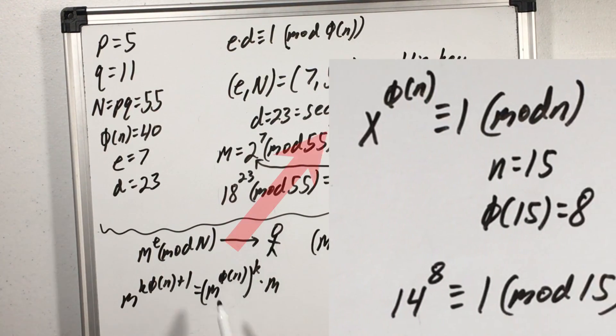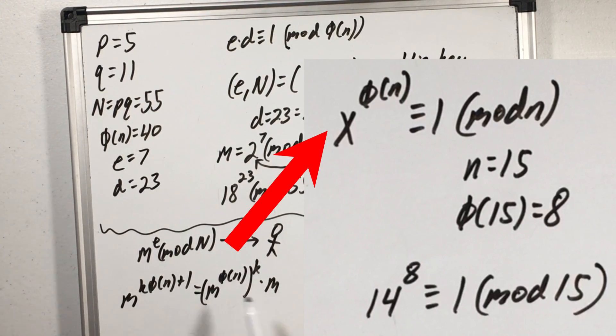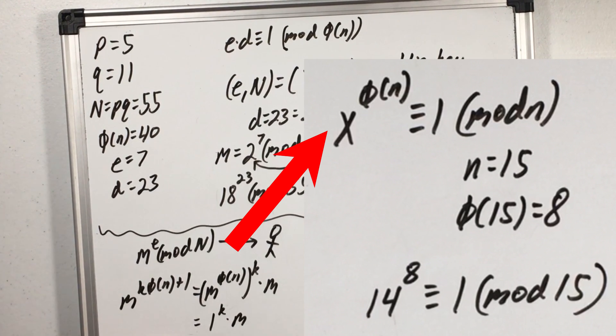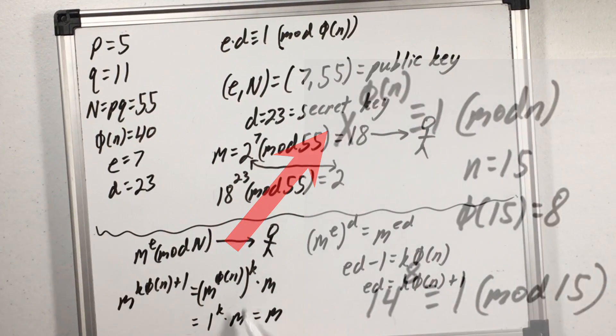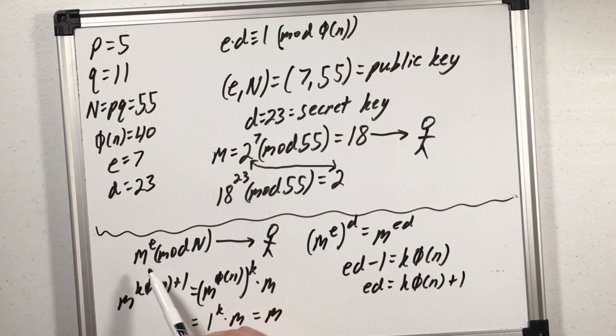And remember before we saw an integer raised to phi of n mod n is congruent to 1. And then 1 to the k is just 1. So this is all equal to m the original message the person sent me and now I can figure out what they said.